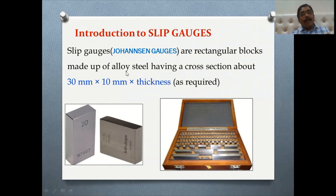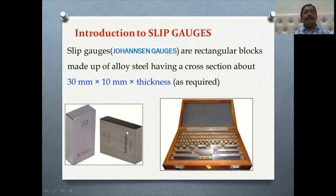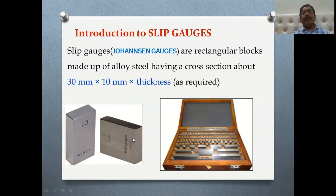A slip gauge is a rectangular block made up of high carbon, high chromium steel. As far as the cross section is concerned, it is 30 by 10, and the thickness varies according to the sizes of the slip gauges being chosen.